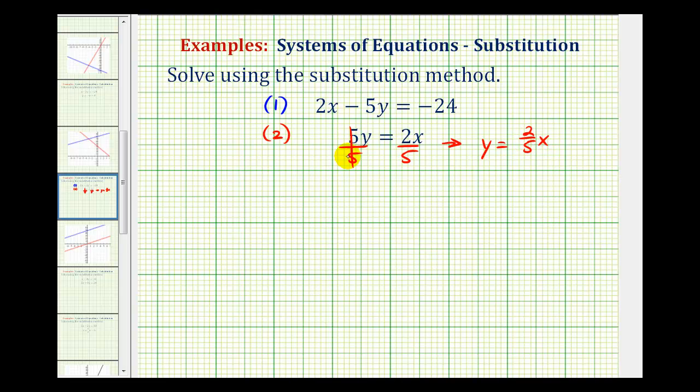Well now that we have one of the equations solved for one variable, we'll perform substitution into the first equation. If we know y is equal to two-fifths x, we can replace or substitute two-fifths x for y in the first equation.